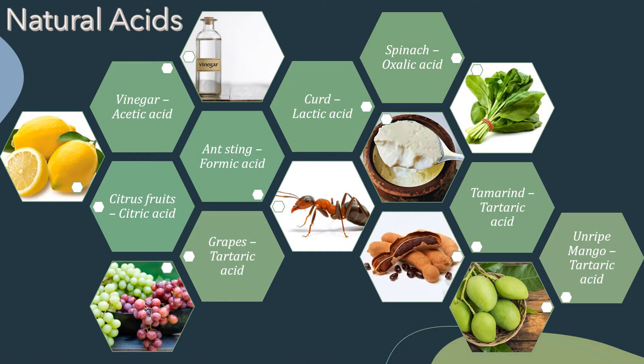Now let's look at some more examples of substances in nature that have natural acids in them. Vinegar has acetic acid. Citrus fruits have citric acid. Ant sting has formic acid. Curd has lactic acid. Spinach has oxalic acid. Grapes, tamarind and unripe mangoes have tartaric acid.